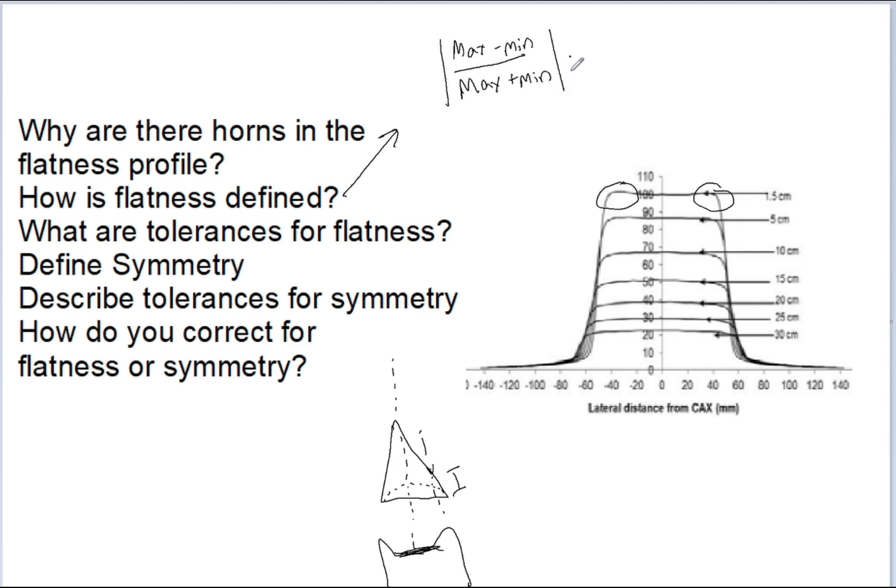we do the absolute value of the max value minus the min value divided by the max value plus the min value, all of that is the absolute value. You multiply that by 100 and that is the TG-45 recommendation and the derivation of flatness. That is what my clinic uses. But again, depending on what source you are looking at, this may be calculated differently.